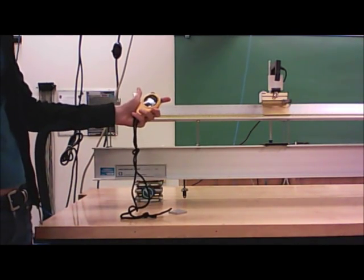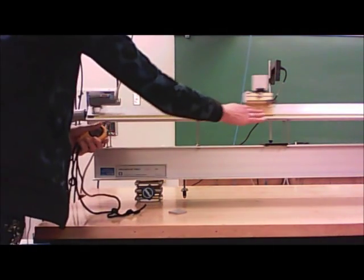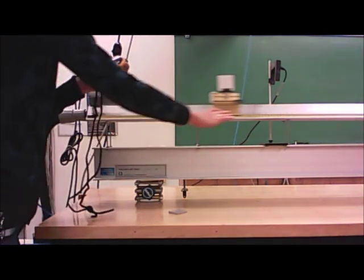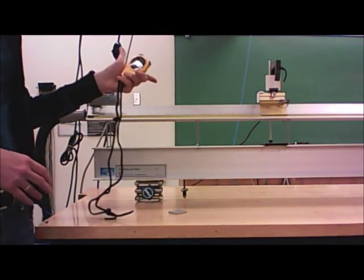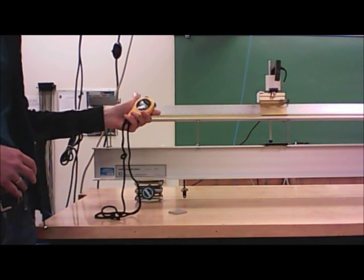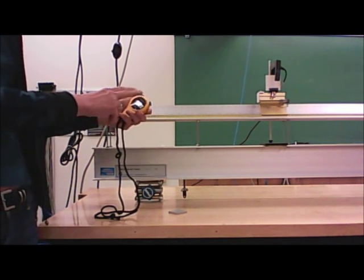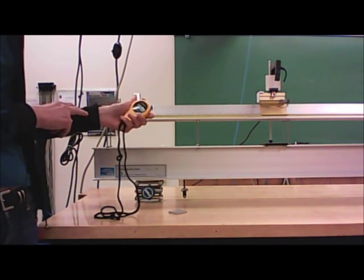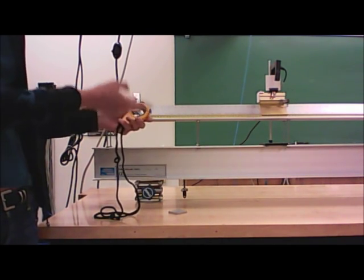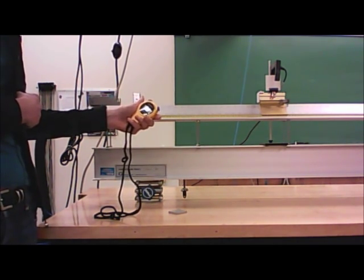You're using your stopwatch to time how long it takes the glider to go from here to here. Your uncertainty on that should be human reaction time, which is about 0.15 seconds. We neglect instrument uncertainty in this case, even though it's a digital scale, simply because human reaction time is so much bigger.